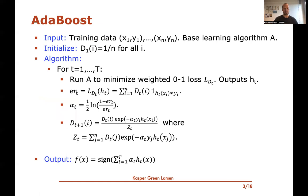We saw AdaBoost in the last two videos as a concrete example of this, where there's a very concrete way of choosing these weights alpha_t and a very concrete way of determining the dataset to train on. The basic idea was that you initialize a uniform weight on each of the points, and in each iteration you run the base learning algorithm to minimize the weighted zero-one loss according to the weight d_t in that iteration. This finds a hypothesis h_t, and you compute its error — which is just the weighted zero-one loss, i.e., the number of mistakes weighted by the probability mass of each example.